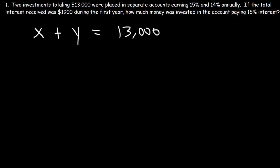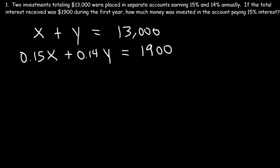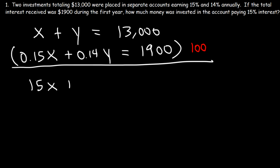The first account with x dollars pays 15 percent interest, which as a decimal is 0.15. The second account pays 14 percent, or 0.14. So 0.15x plus 0.14y equals 1,900. Since we have decimals, let's multiply the second equation by 100: 15x plus 14y equals 190,000.